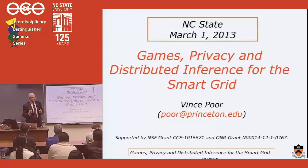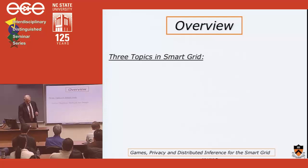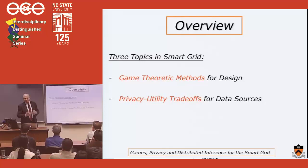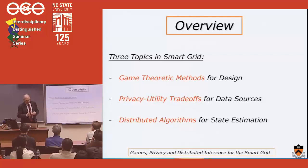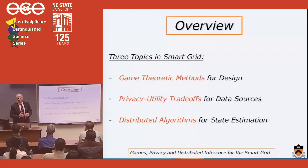What I'm going to talk about today are three things. One is the use of game theory for smart grid design. Another is privacy for data sources, specifically as applied to problems arising in smart grid — this is really an information theoretic problem. And finally, I'll talk about distributed algorithms for state estimation in smart grid. So really there are three things: game theory, information theory, and statistical inference, all of which have very wide application in networking problems.